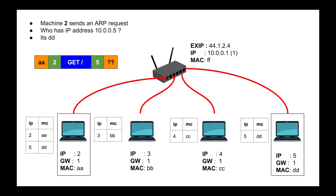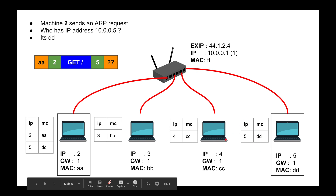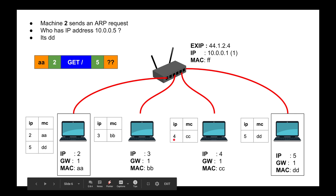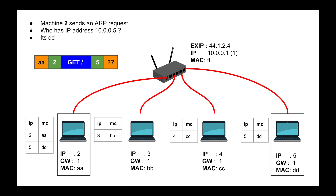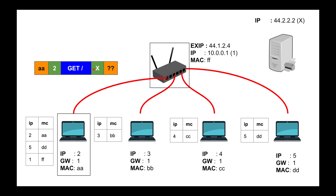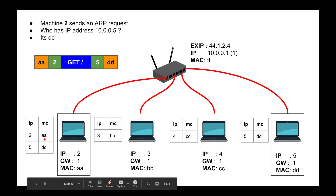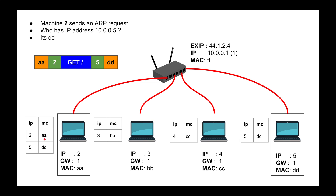Machine 5 replies saying 'I have that IP address, here's my MAC address.' The rest of the nodes drop the request — they just say 'that's not me.' This is also where things can go wrong: if someone tries to impersonate another machine they can fake the reply saying 'I have that IP and here's my MAC' — that's called ARP poisoning, but it's outside the scope of this video. Now I know the MAC address, so I update my ARP table and can build the frame and send it — I cache it so I don't need to do another expensive ARP request next time.